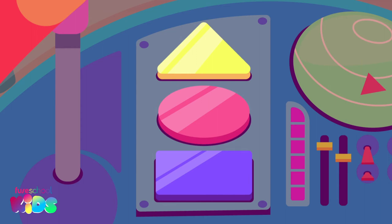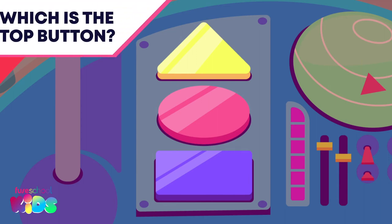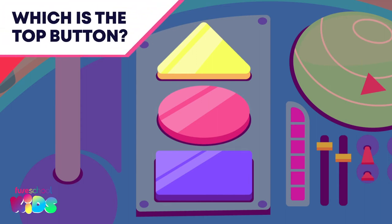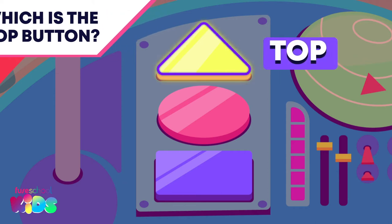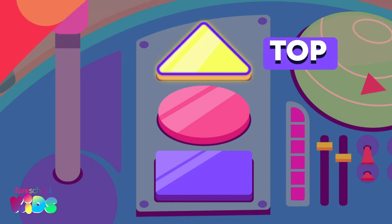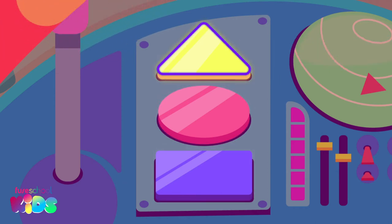The top button turns the rocket on. Which button is on top? Well done! This is the top button, as it is above the other two buttons.